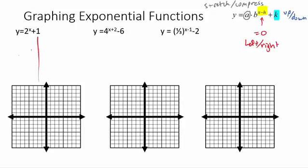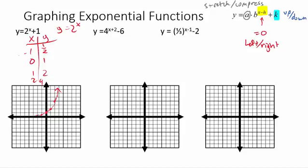Let's look at this first shifted example. I'm going to start by graphing the parent function y equals 2 to the x, not worrying about the plus 1 just yet. A good place to start is the locator point at 0, 1. Then we've got negative 1 giving 1 half, and positive 1 giving 2. Plugging in 2 gives 4. You can see the initial graph is making this sort of curve shape.